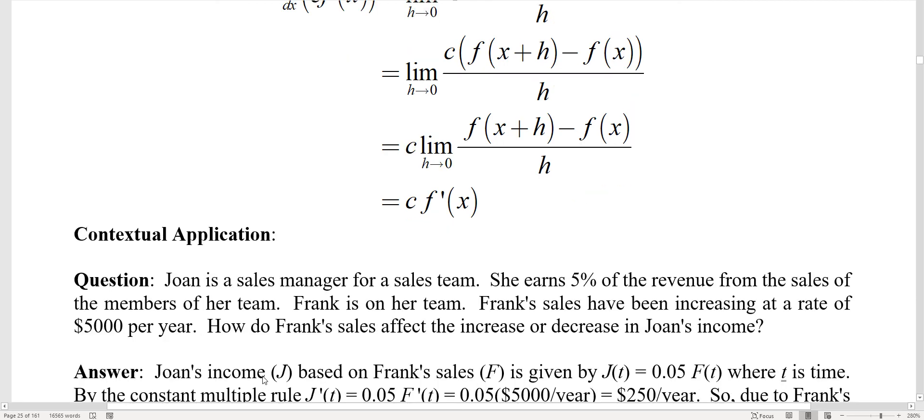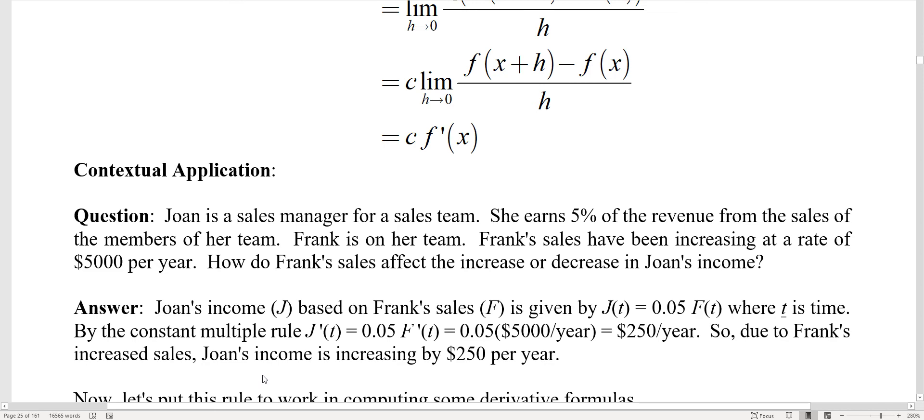Okay, well you're back. Hopefully you worked this out. Joan's income, we'll call that j, is based on Frank's sales f, given by j(t) = 0.05f(t), where t is time. That's the part of Joan's income that's based on Frank's sales - presumably she gets 5% of some other folks and maybe a salary on top of that. By the constant multiple rule, j'(t) = 0.05f'(t). f'(t) is $5,000 per year, so if you multiply that together you get $250 per year, and that's going to be j'(t), which is the increase in Joan's income. So due to Frank's increase in sales, Joan's income is increasing by $250 per year.